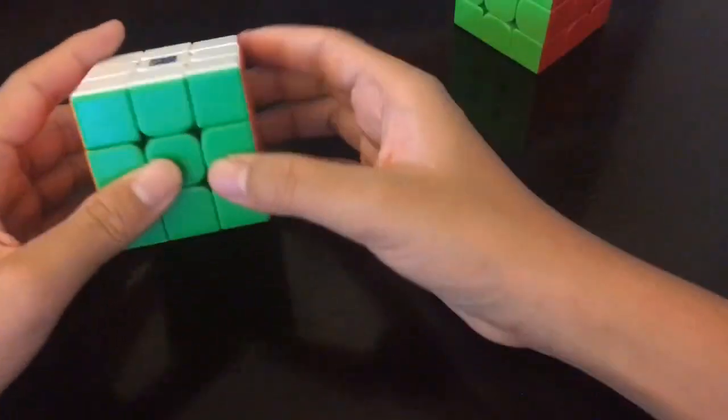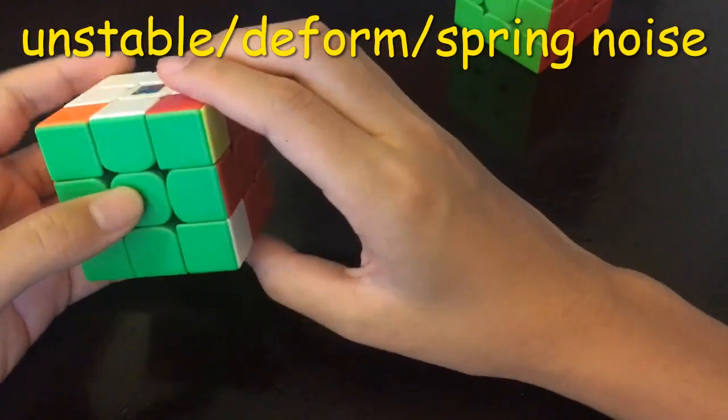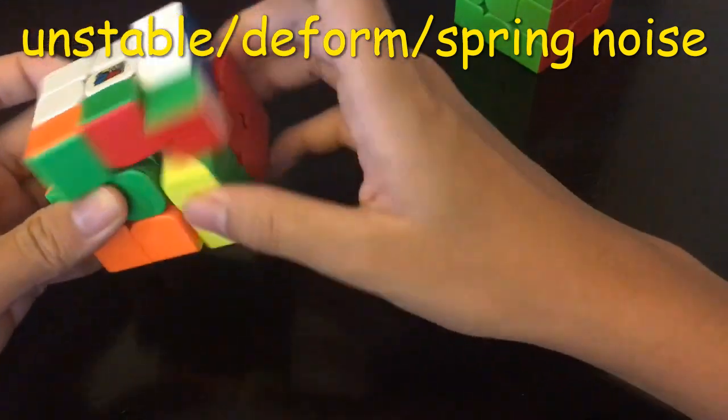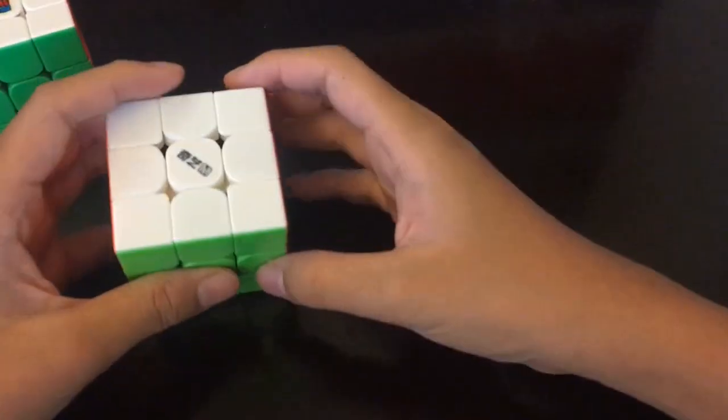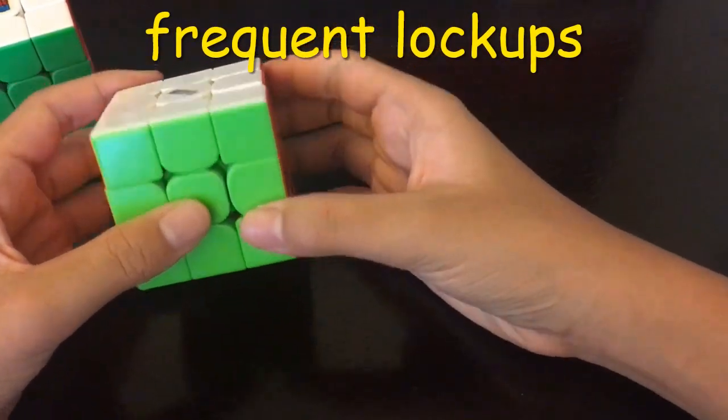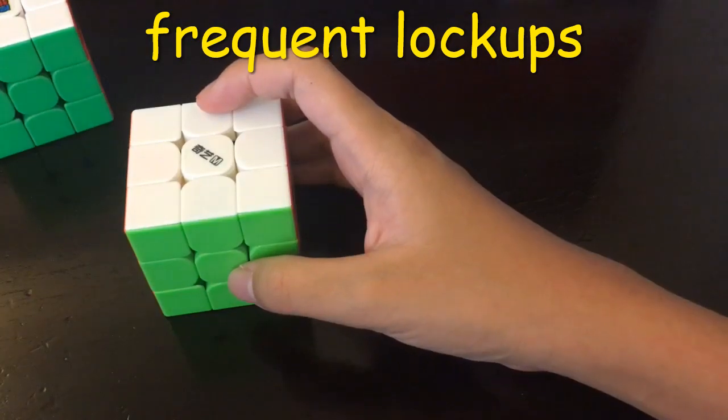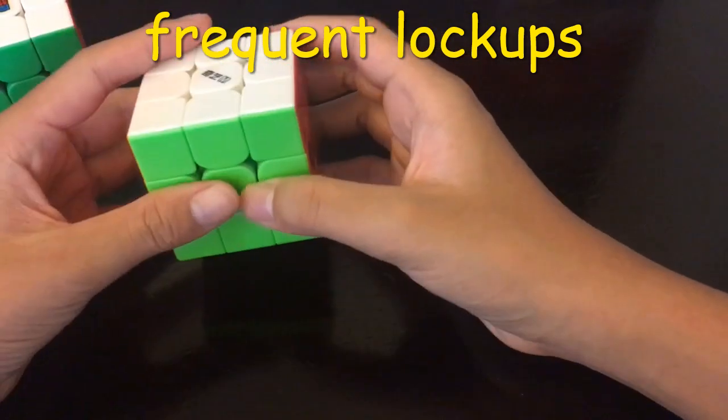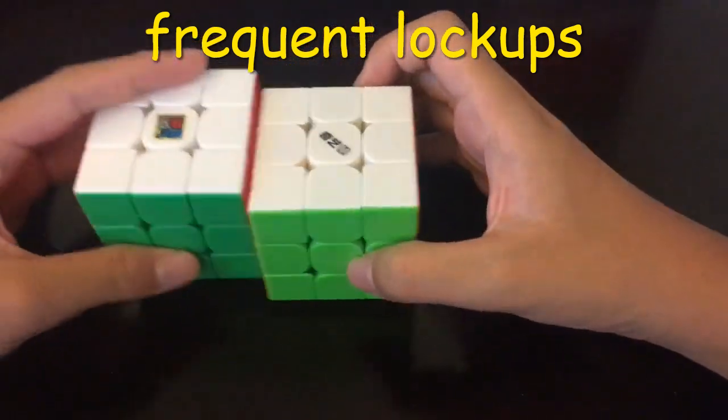For the R3M2020, the bad thing is it's just a bit unstable and it's easy for the cube to deform. For GMS, the bad thing is it's very easy to lock up. I don't know how or why, but I always lock up during solves, and that's pretty much a problem.